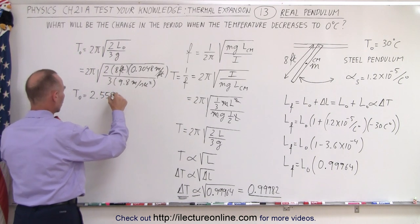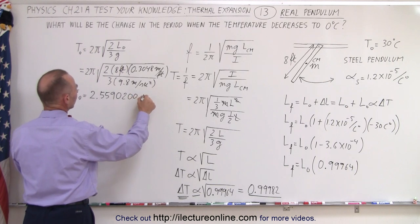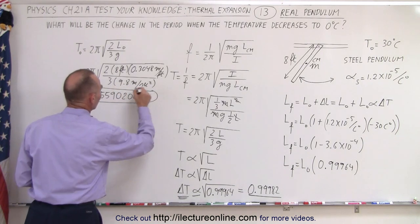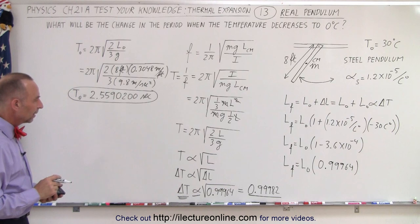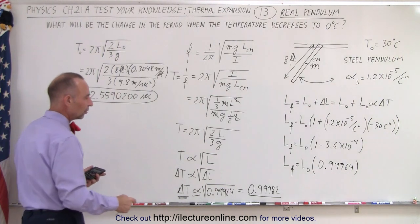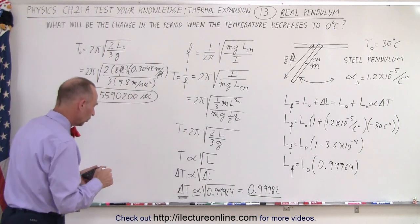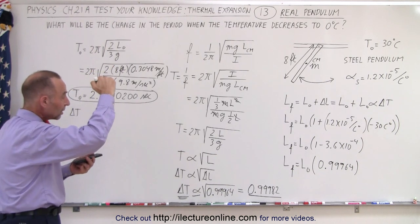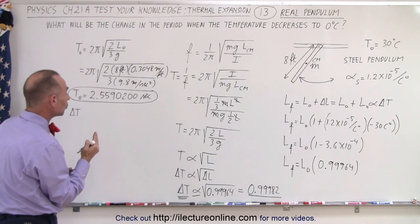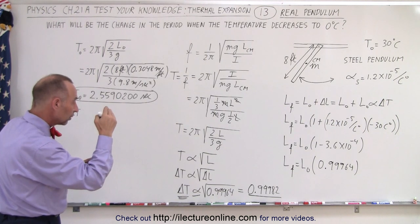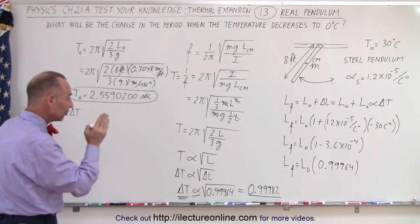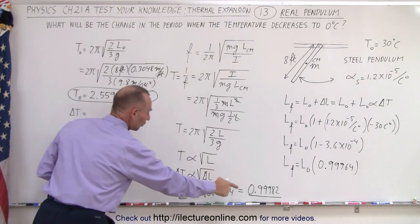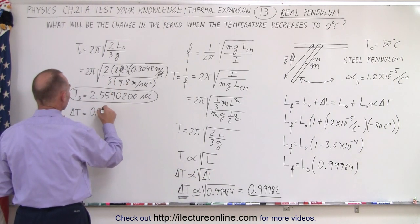The initial period is 2.5590200 seconds. Now for the change in the period: realizing that the pendulum is going to shrink, which means the period is actually going to get shorter — a faster period. So the period will decrease. The delta T is proportional to 0.99982.